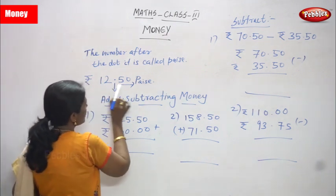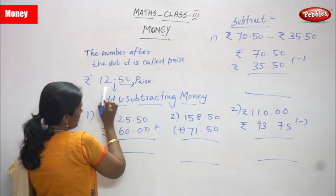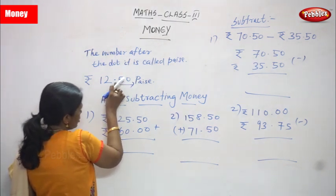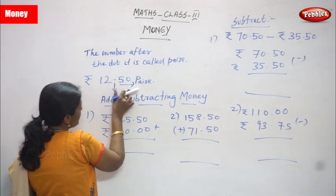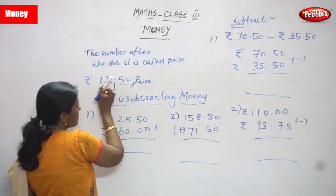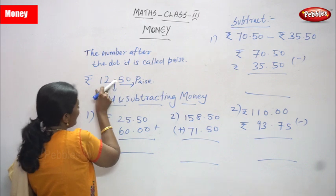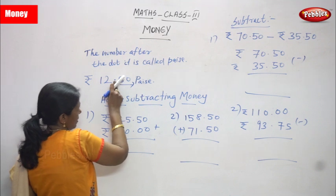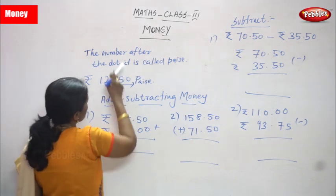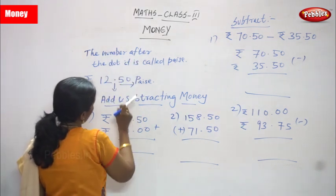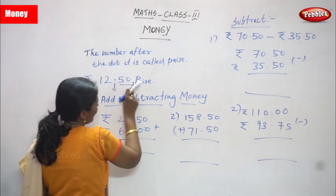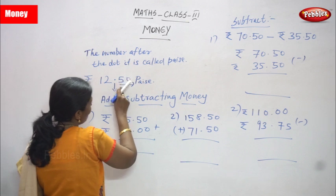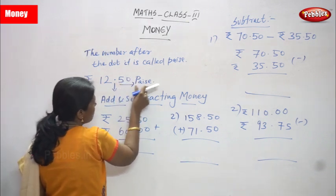This dot segregates the two numbers. The first number is rupees. After the dot, you have to write the paise. We can call it the number after the dot. So after the dot, we write 50 — that is called paise.